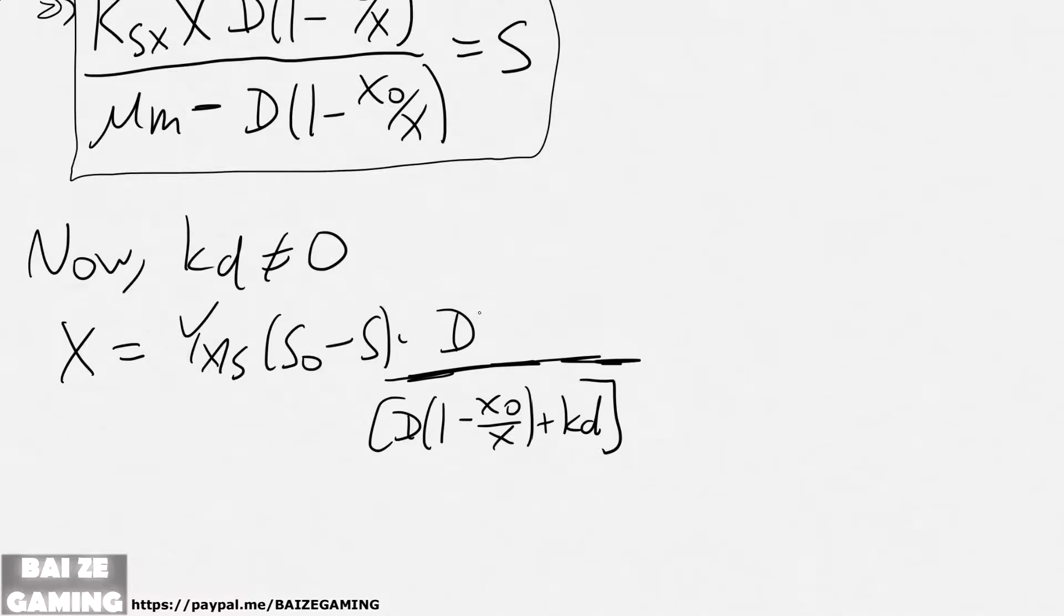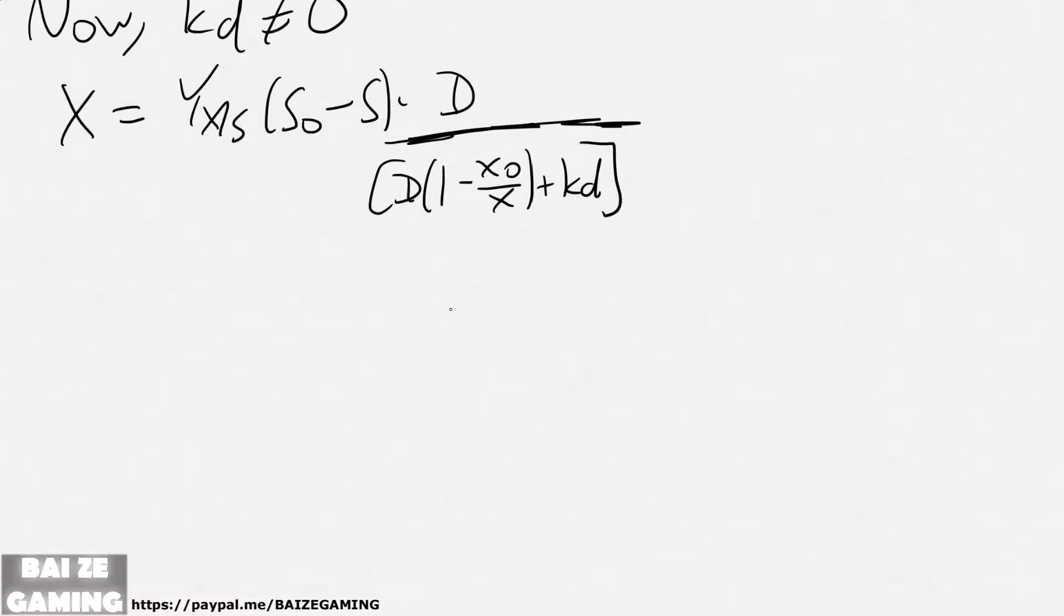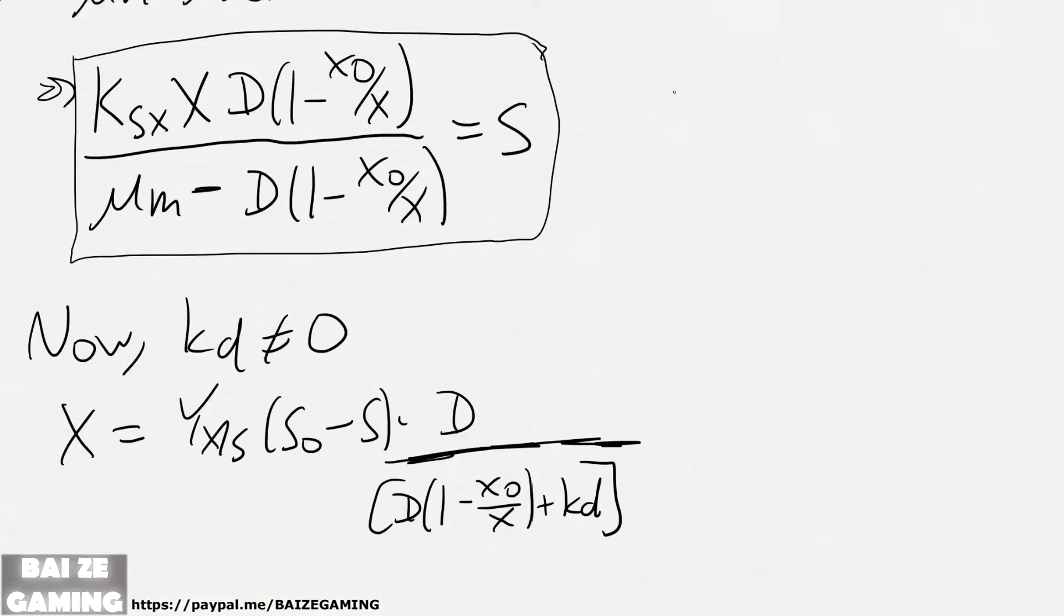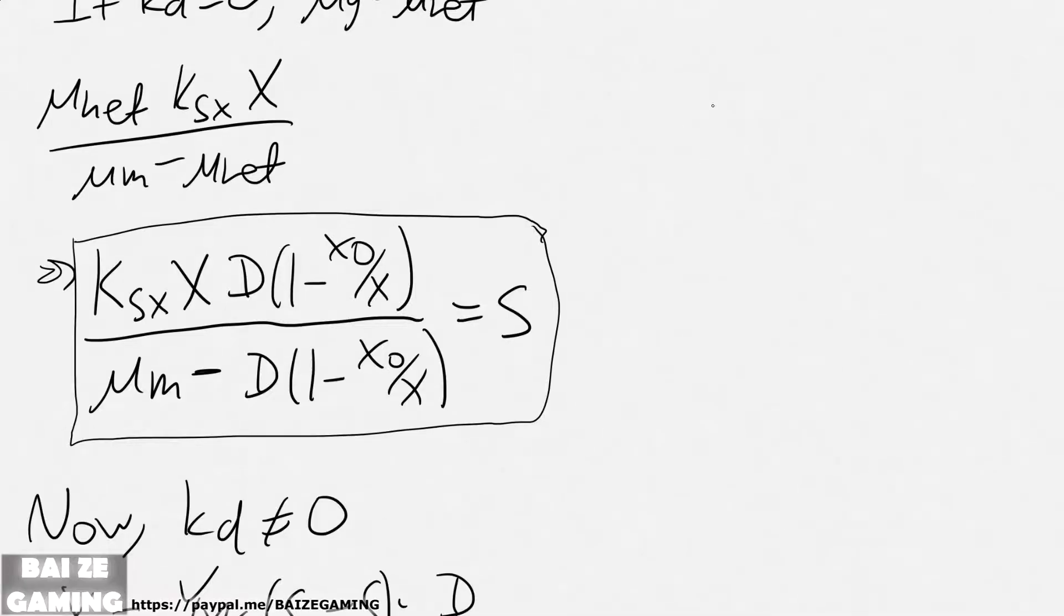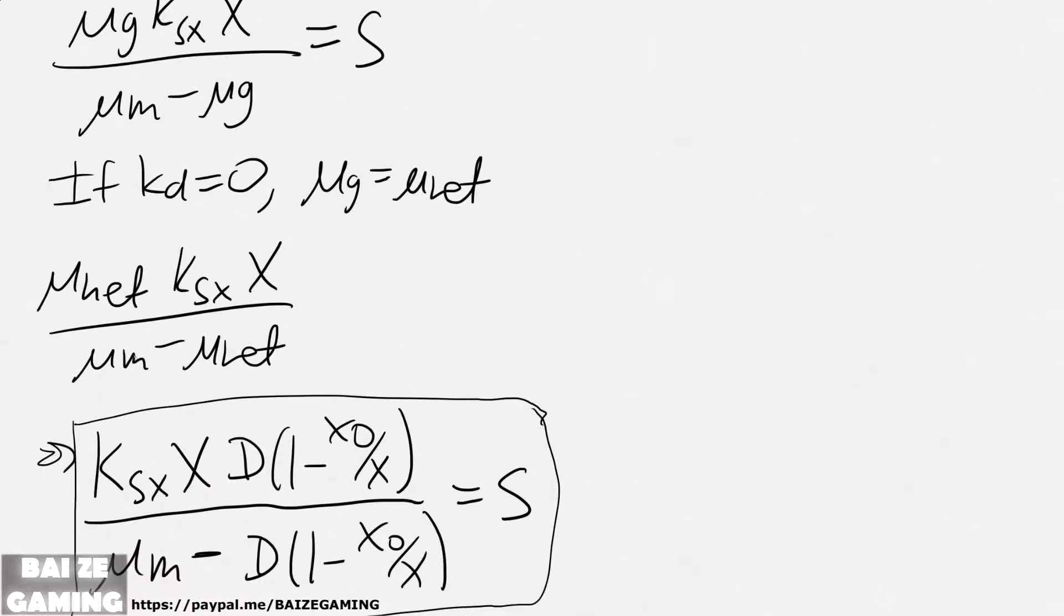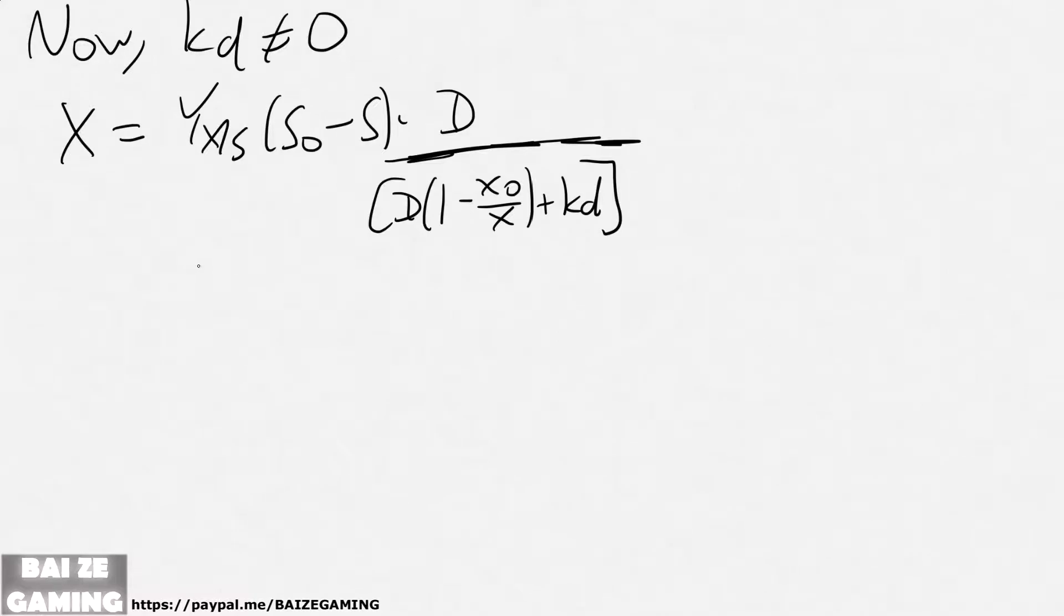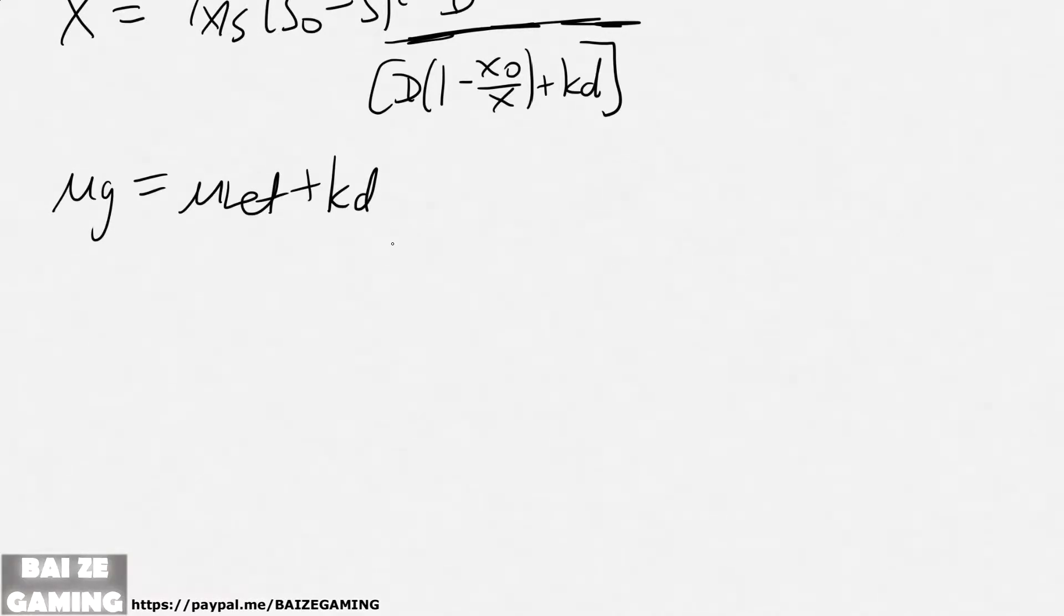Okay, so we have that equation, and really what you can just do is you can just get a substrate concentration from before. We had this and replace it with μₙₑₜ, but then if we account for the other one, then μg equals μₙₑₜ plus kd. They're not equal to each other if kd is non-zero, the maintenance coefficient. So then we'll get...